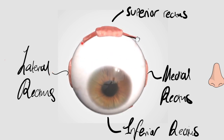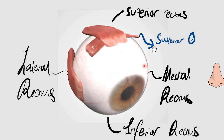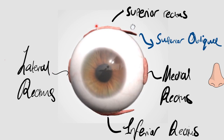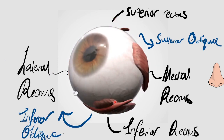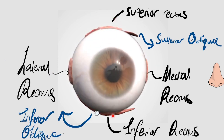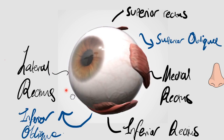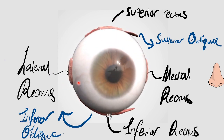If the tendon on the superior oblique contracts, it's going to pull the eye downwards and towards it as well. And on your inferior oblique, when the tendon contracts, it's going to basically rotate your eye outwards - extort it and pull it upwards.